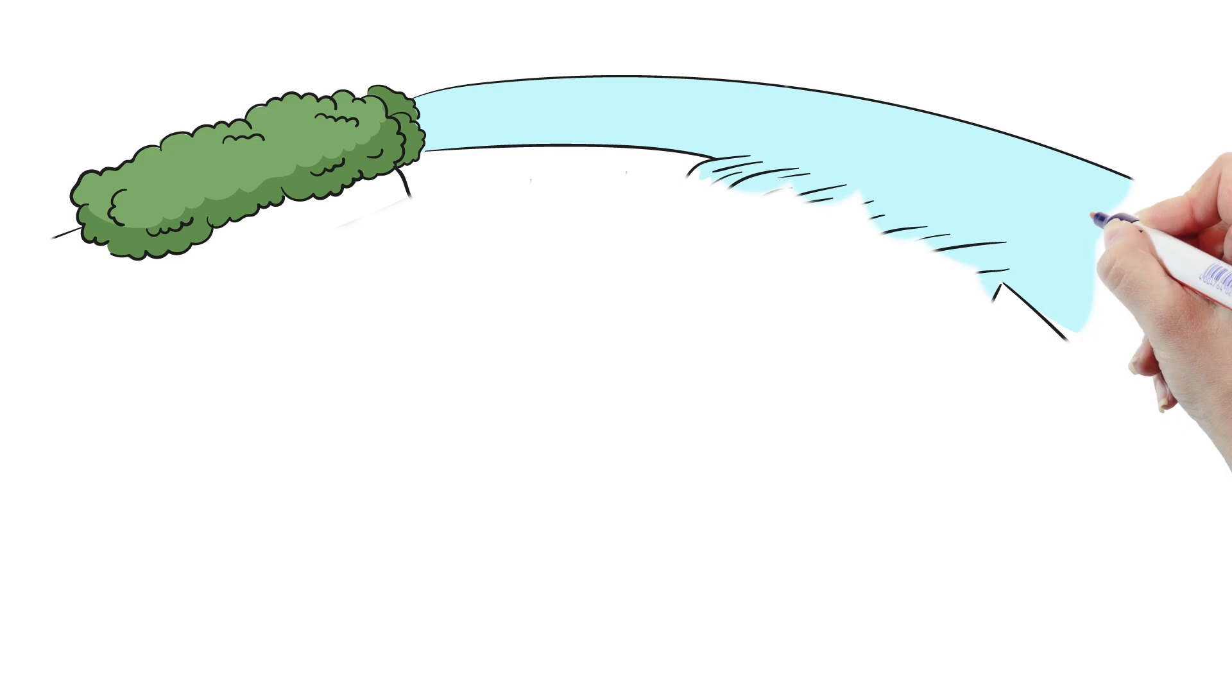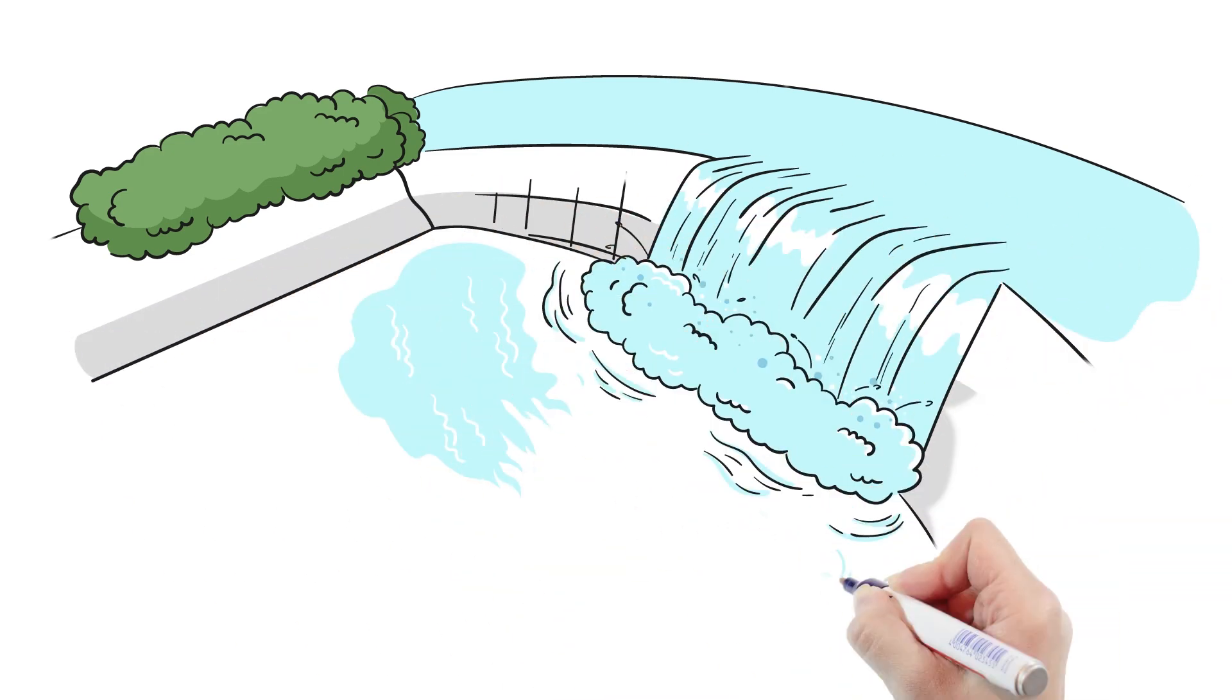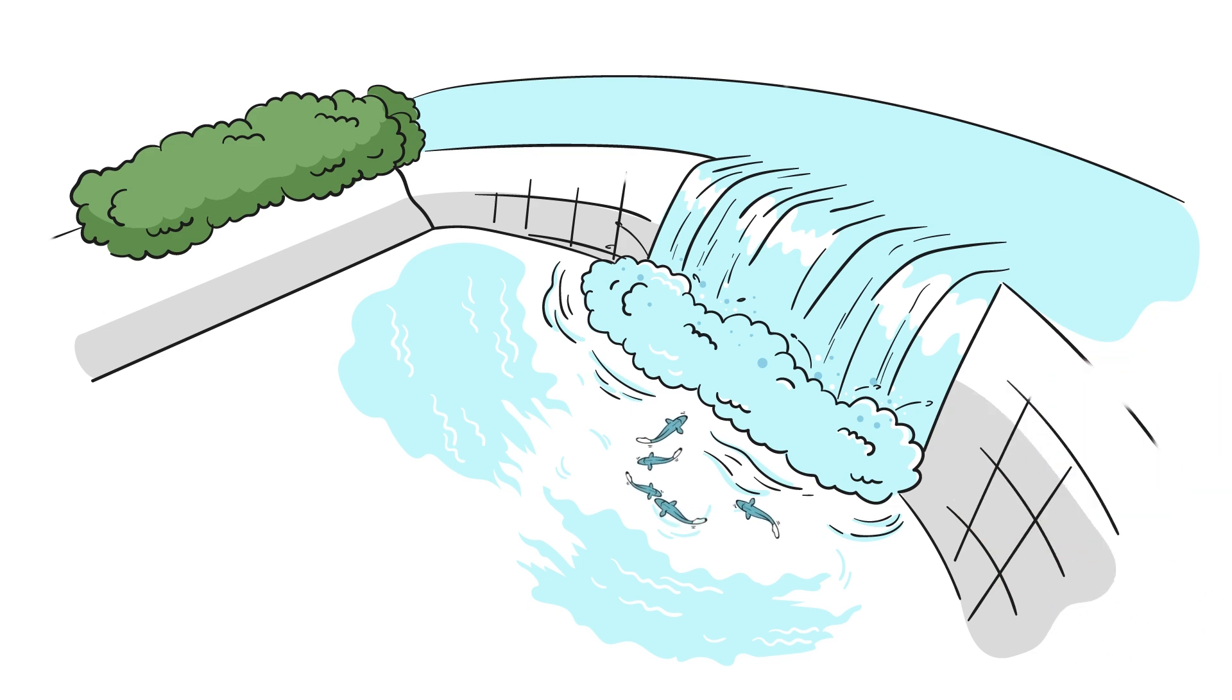Beyond failures, dams damage river ecosystems and habitats. Fish activity and movement are especially impacted. Fish that depend on flowing water and clean riverbeds for their habitat have populations dwindle in areas where there are dams.